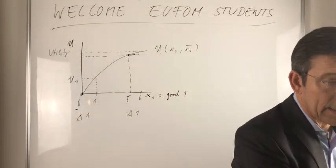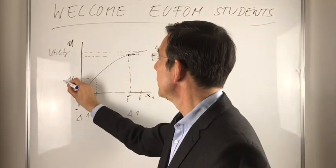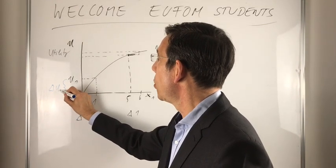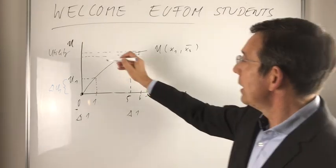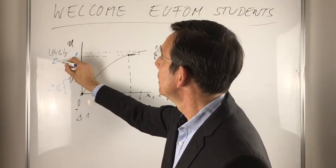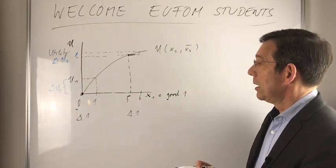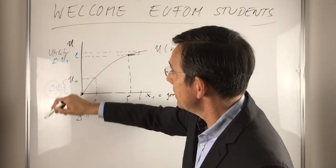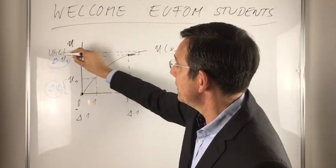Let's take a second color. So here you see the utility increase is delta u1, let's say it's u1. And here the utility increase is delta u2, let's say it's u2. And you see this increase is larger than this increase.